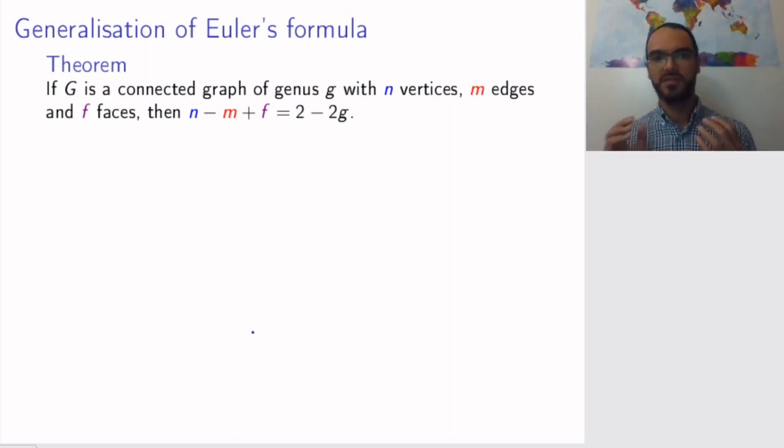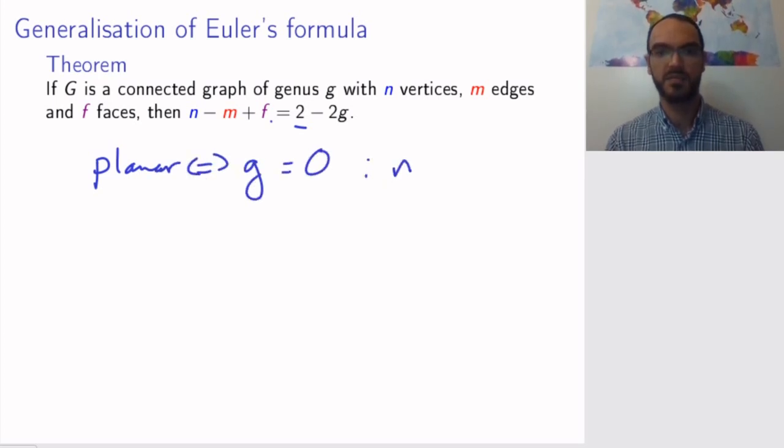Now there is, you shouldn't be surprised, a generalization of Euler's formula for such graphs. So remember, we had a graph being planar. When a graph was planar, then n minus m plus f was equal to 2. Now if the graph is not necessarily planar, but has genus g, then n minus m plus f is 2 minus 2g. So remember we said that planar was the same as the genus is equal to 0, and then we get n minus m plus f is equal to 2.